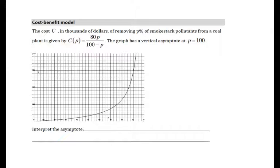Vertical asymptotes tend to be a little bit more difficult to interpret than horizontal asymptotes. Let's take a look at this cost-benefit model, where the input variable is the percent of smokestack pollutants that can be removed by cleaning, and the output variable is the cost of removing that percent. We are told that this has a vertical asymptote at p equals 100, but we can verify that.